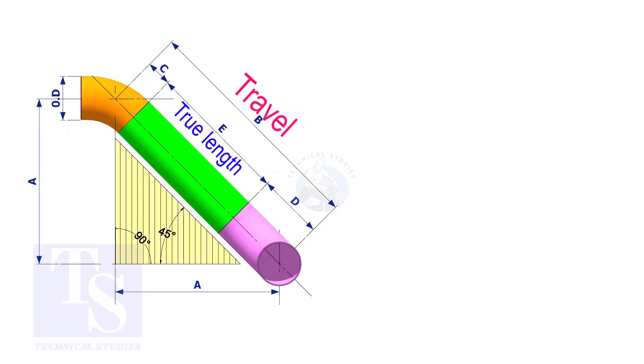Assume that the elbows are short radius. Nominal pipe size is 4 inch. The travel length is 1500mm. The joint gap is 3mm. Calculate the true length of the spool.